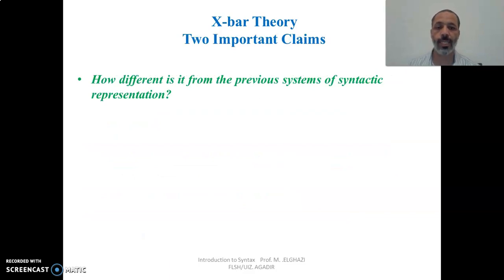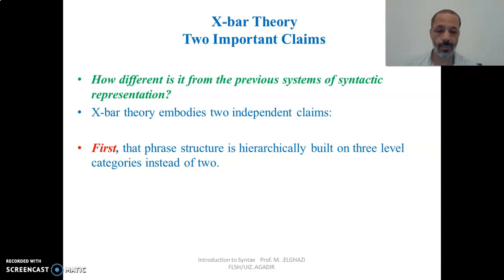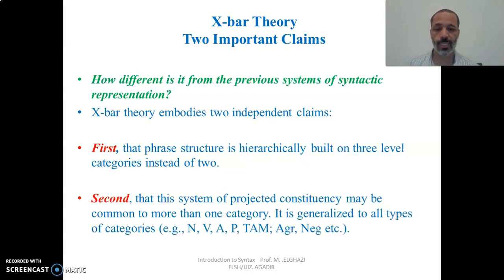How different is X-bar theory from previous systems of syntactic representation? X-bar theory embodies two independent and important claims. The first one is that phrase structure is hierarchically built on three level categories instead of two. As we know, there are only two level categories in traditional grammar: the word level and phrase level. Chomsky argues that we have to introduce another level — an intermediate level category between word level and phrase level categories.